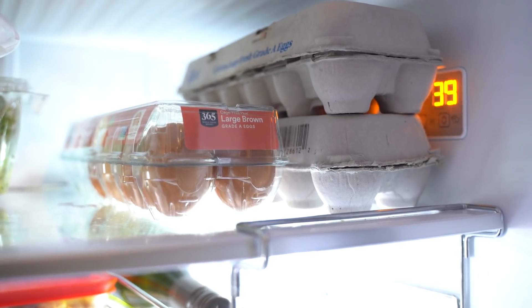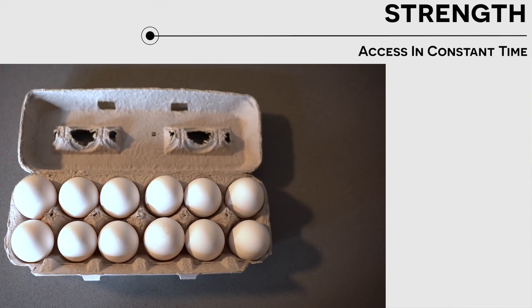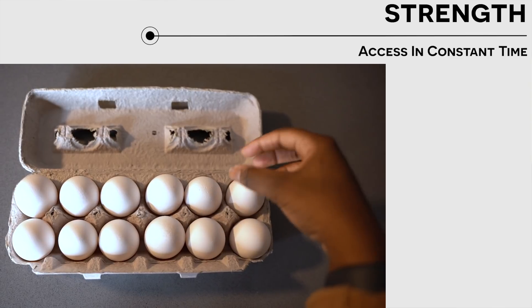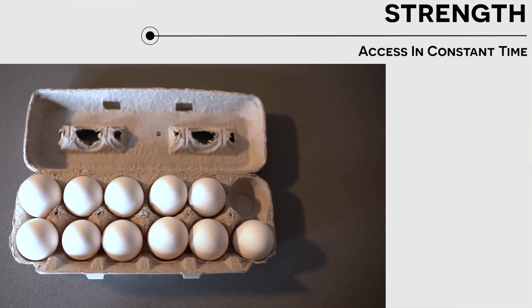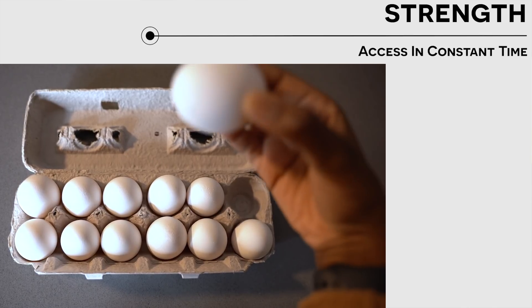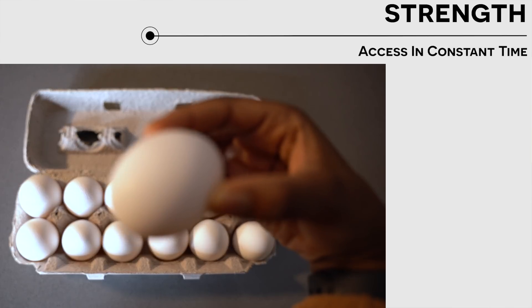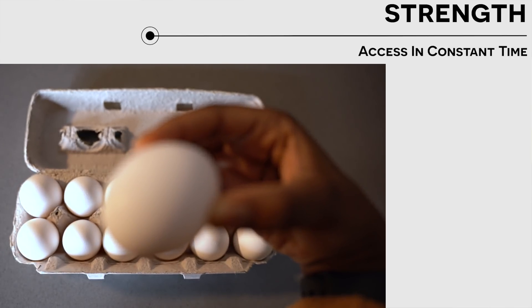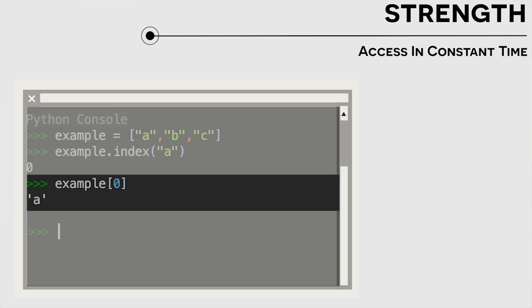Visually, an array reminds me of an egg carton and has a lot of the same properties. So just like egg cartons, arrays have a lot of great benefits. So let's say that we're looking for a specific egg and we have the index of the egg. We can quickly get the egg that we're looking for without having to access all the eggs to find the egg at a specific index. So this basically means that one of the biggest advantages of an array is that access happens in constant time.